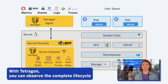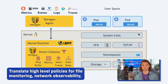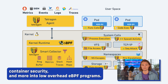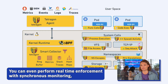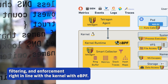With Tetragon, you can observe the complete life cycle of every process on your machine with Kubernetes context awareness. Translate high-level policies for file monitoring, network observability, container security, and more into low-overhead eBPF programs. You can even perform real-time enforcement with synchronous monitoring, filtering, and enforcement right in line with the kernel with eBPF.